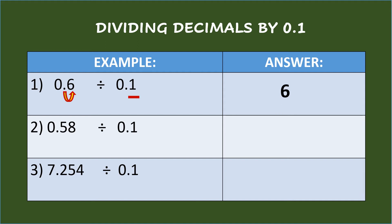Second example: fifty-eight hundredths divided by one-tenth. Again, the divisor has only one decimal place, so move the decimal point of the dividend one place to the right and put the decimal point. So the answer is five and eight-tenths.